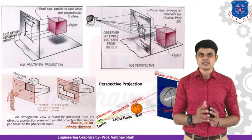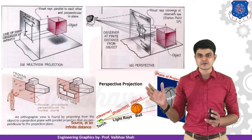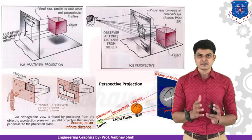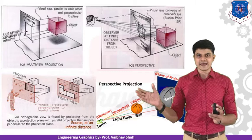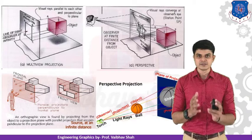Let us understand by one more example. There is one observer standing in front of the object with a plane of projection placed in front. When the observer tries to take its front view from 90 degrees to that object, you can have the front view located on this plane — an L-shaped object made by a few boxes. This is nothing but the front view generated on the vertical plane in front of your object.